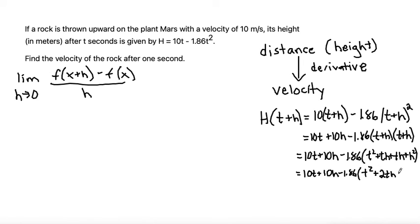Now I can get rid of my last parenthesis by distributing my -1.86. So 10t + 10h - 1.86t² minus, if I do 1.86 times 2, that is 3.72th and -1.86h².